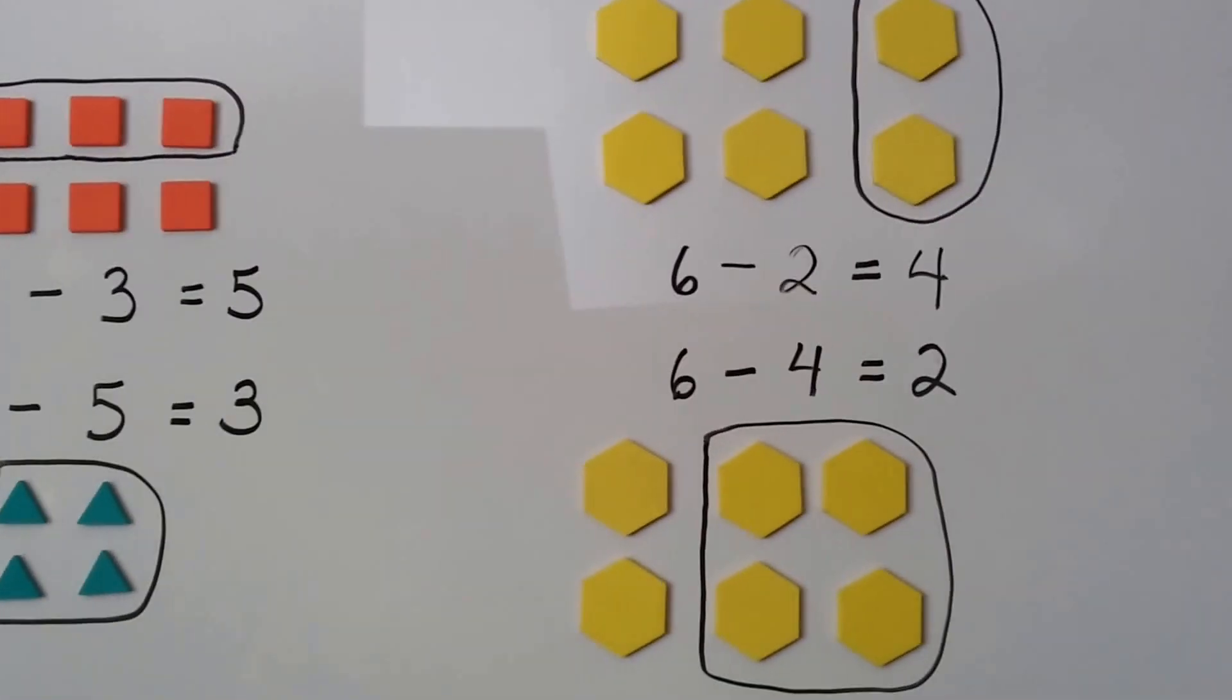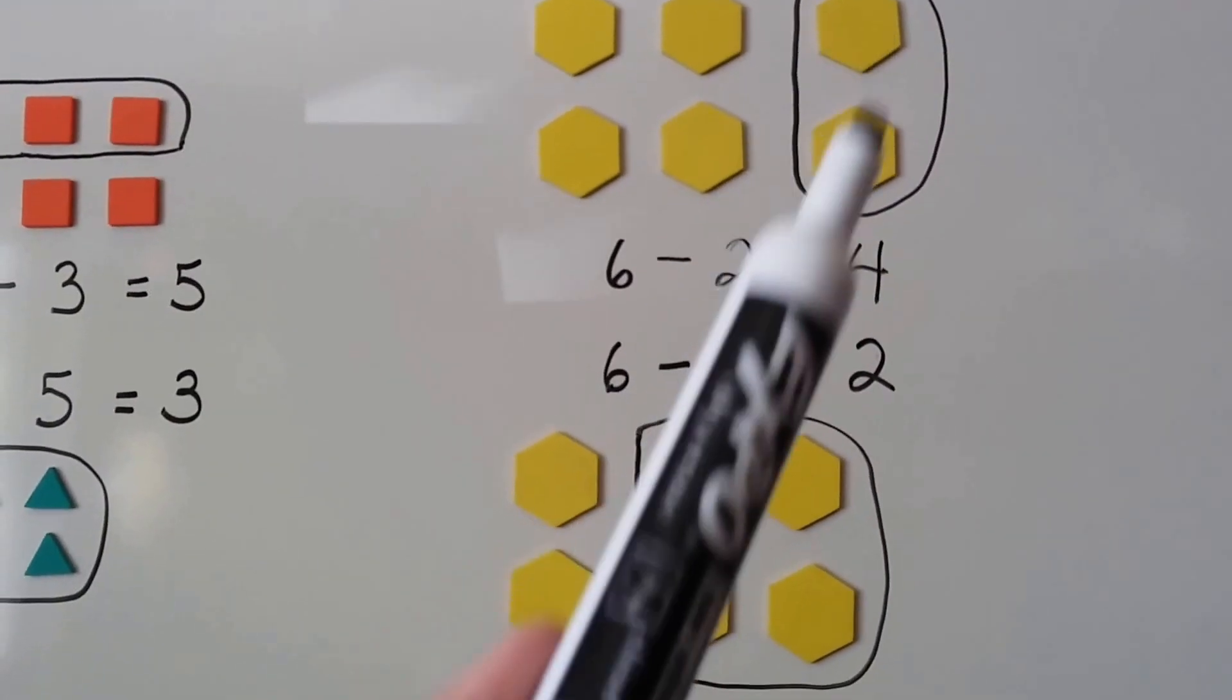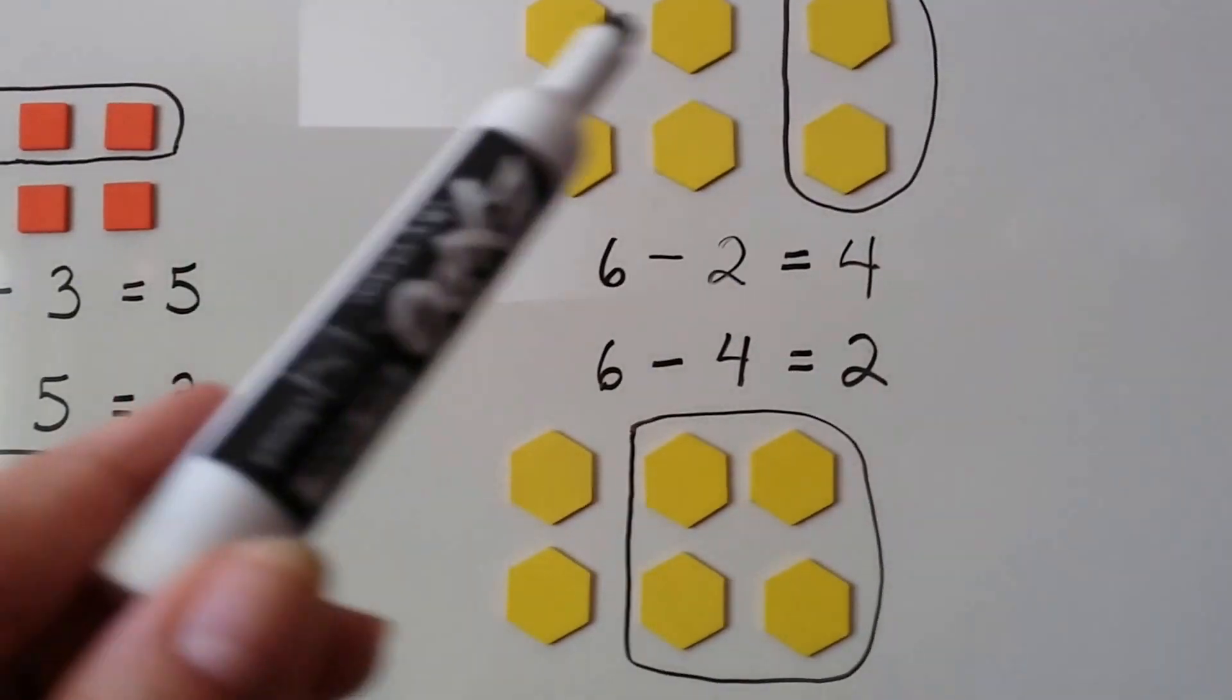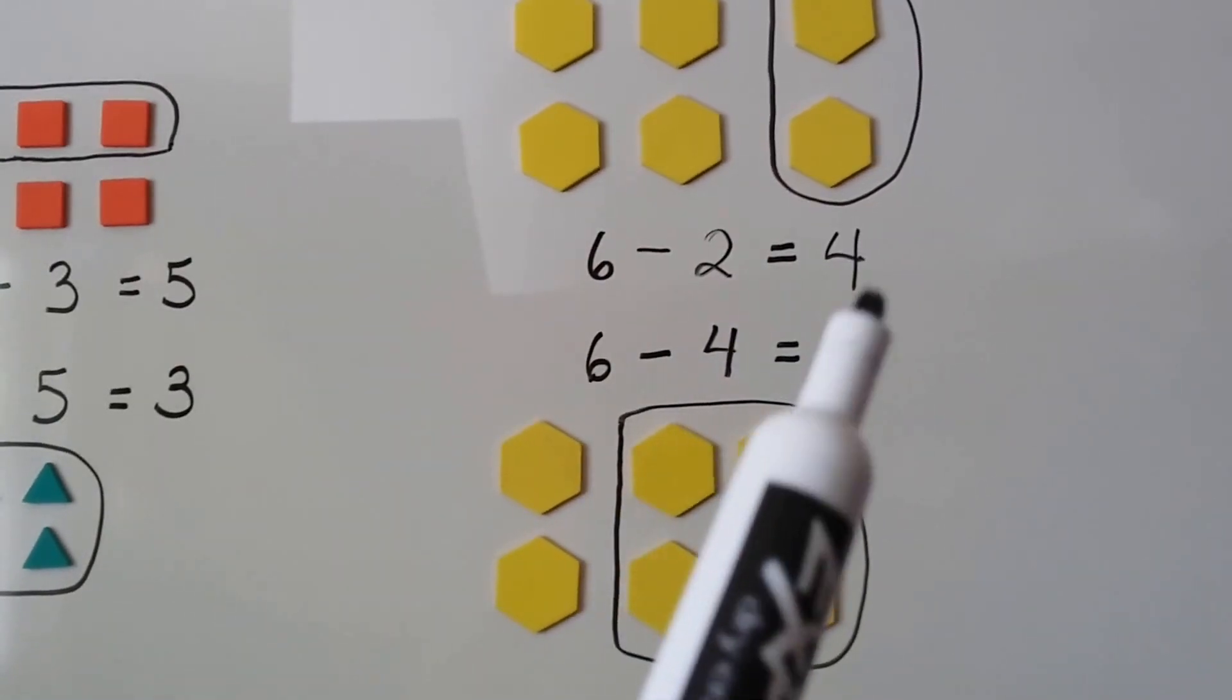We've got 6 yellow hexagons. If we take 2 of them away, we're going to have 4 left: 1, 2, 3, 4. 6 minus 2 equals 4.